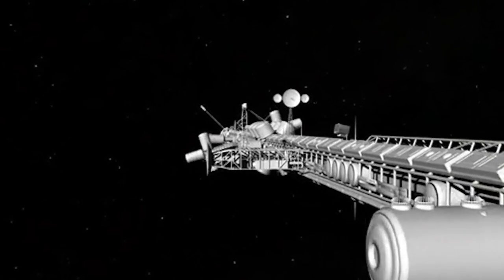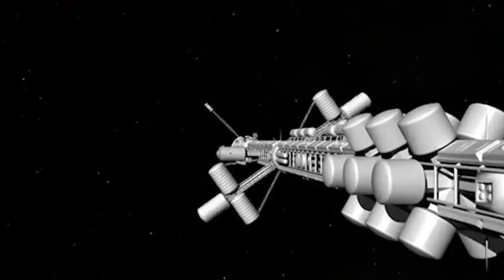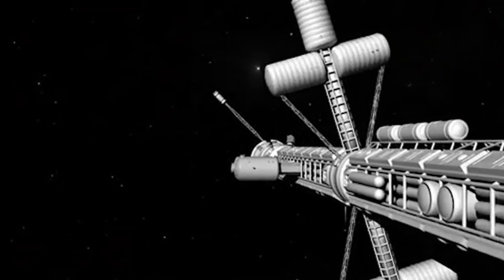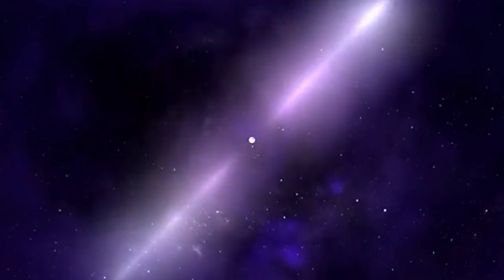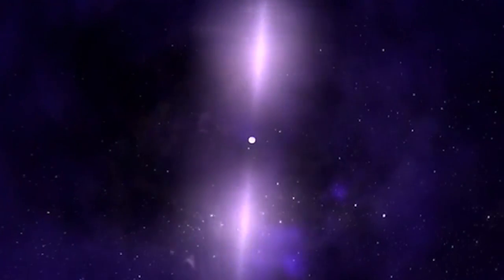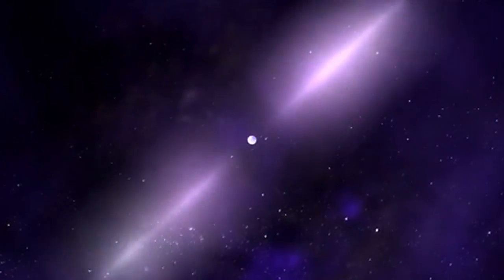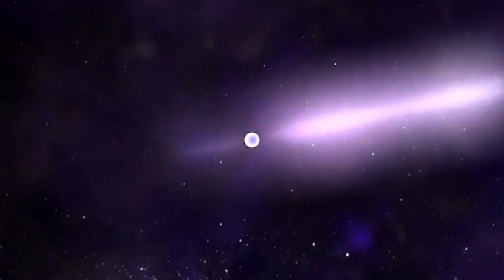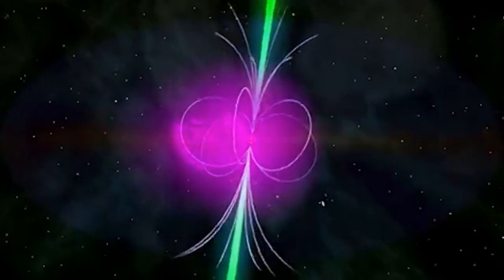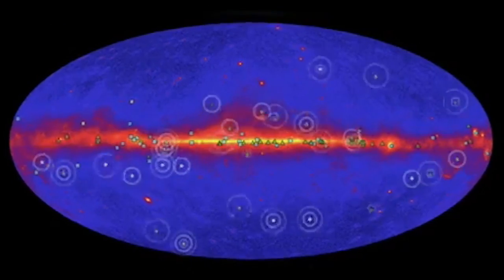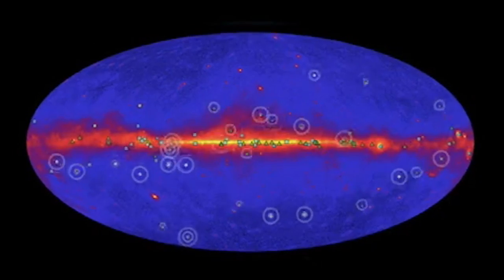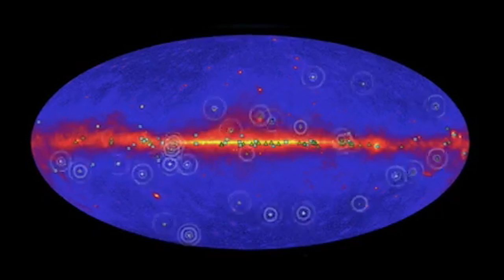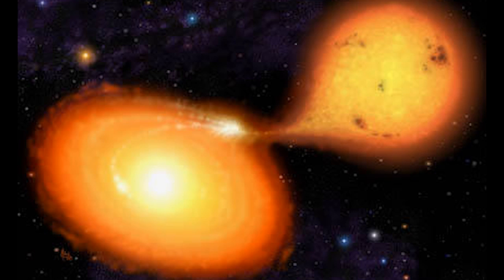Compact stars of less than 1.44 solar masses, what they call the Chandrasekhar limit, are white dwarfs. Populations and distances: at present, there are about 2,000 known neutron stars in the Milky Way and the Magellanic Clouds, the majority of which have been detected as radio pulsars. The population of neutron stars is concentrated along the disk of the Milky Way, although the spread perpendicular to the disk is fairly large. The reason for this spread is due to the asymmetry of the supernova explosion process.